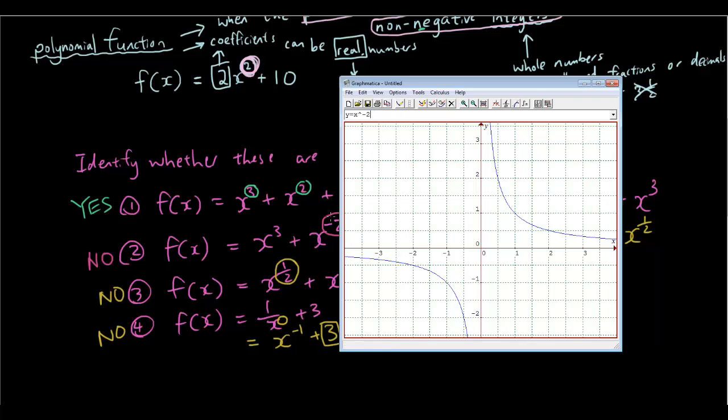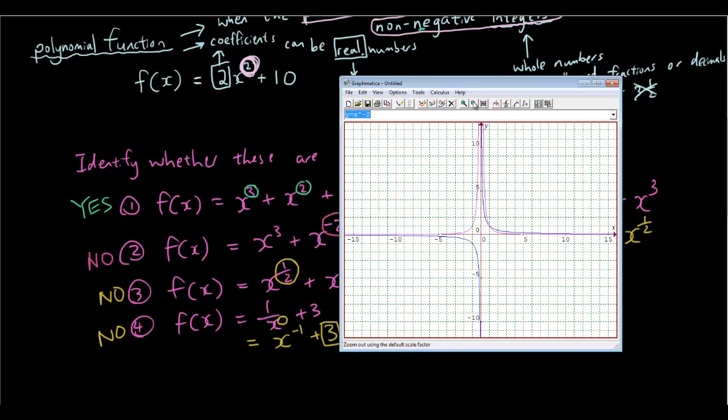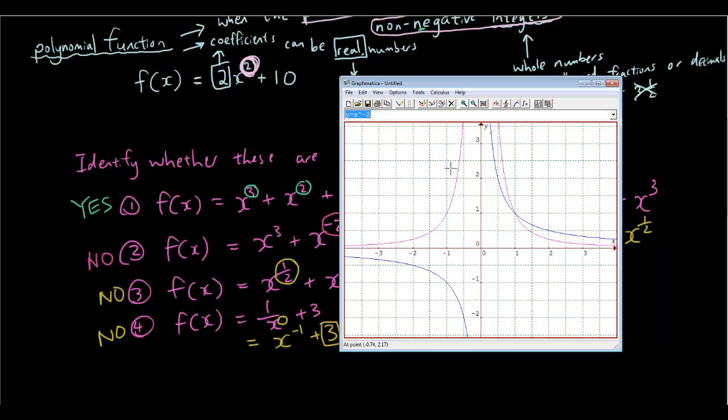And, then same thing with negative two. Again, there is no... the lines never join up. What about x to a half.